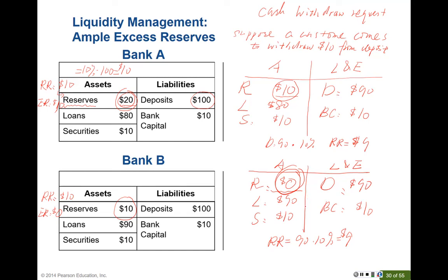How can Bank B survive in this case? One way is to sell its securities. If Bank B sells the $10 in securities, the securities decline to zero but the bank receives $10 cash, which it can put into its reserve. Securities act as what people call a secondary reserve. Most securities banks purchase are Treasury securities, which are liquid and safe, so they help the bank meet cash withdrawal requests.